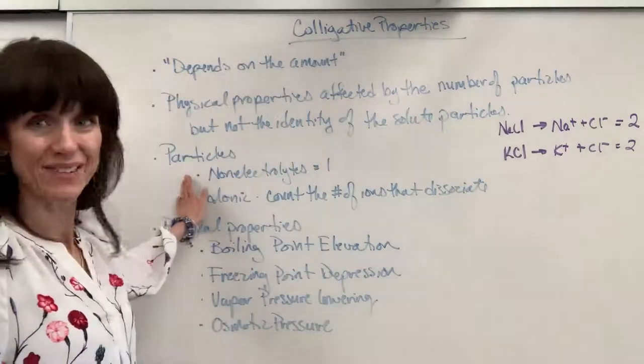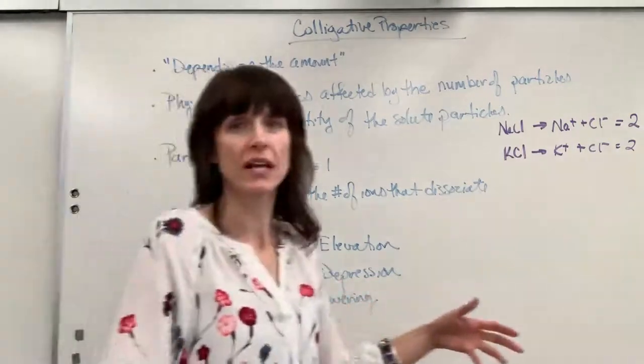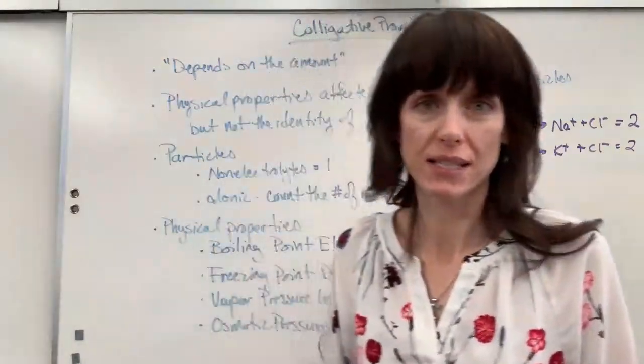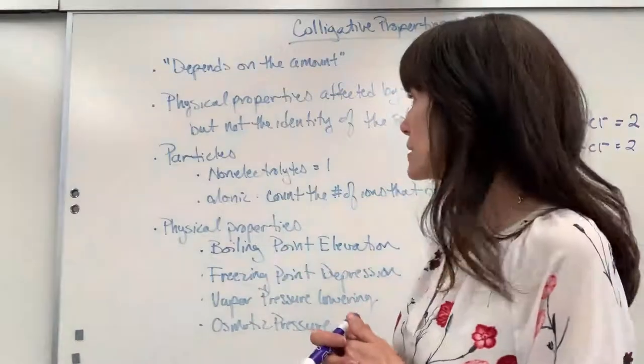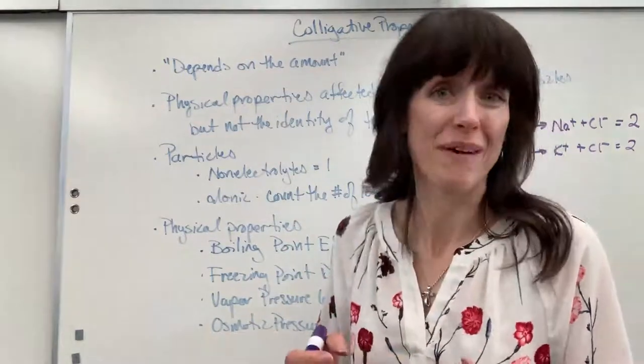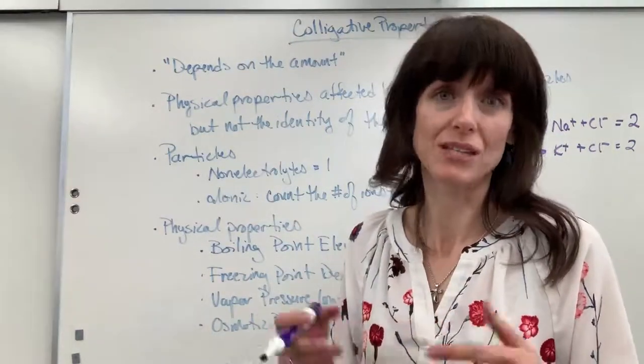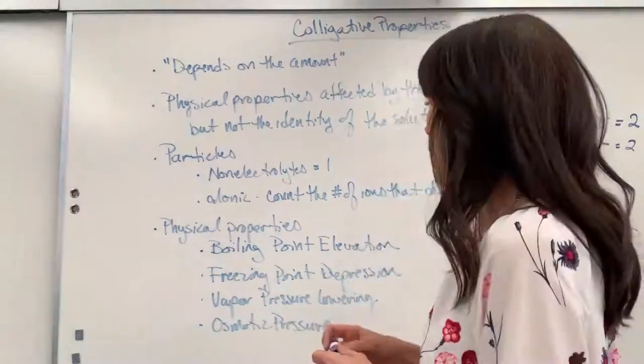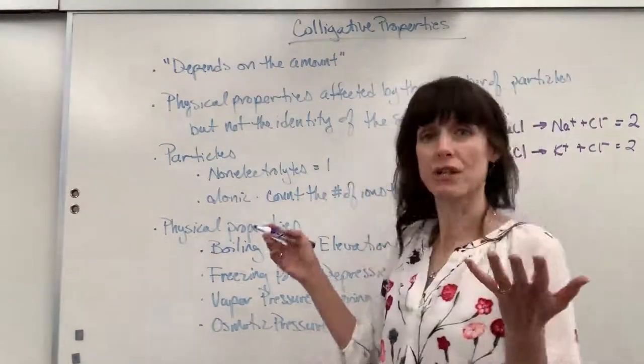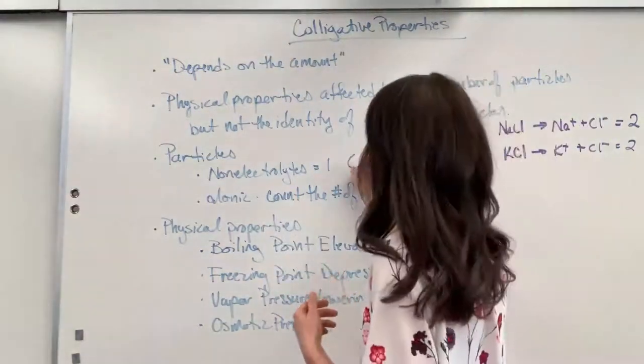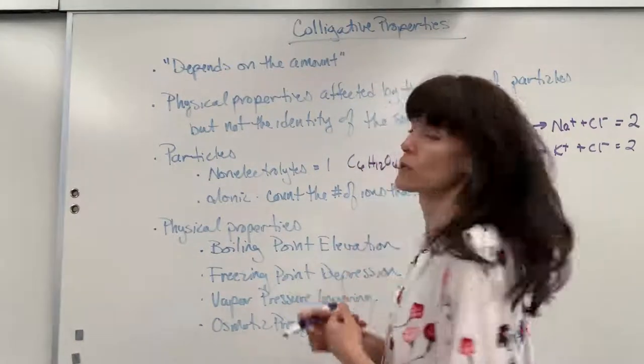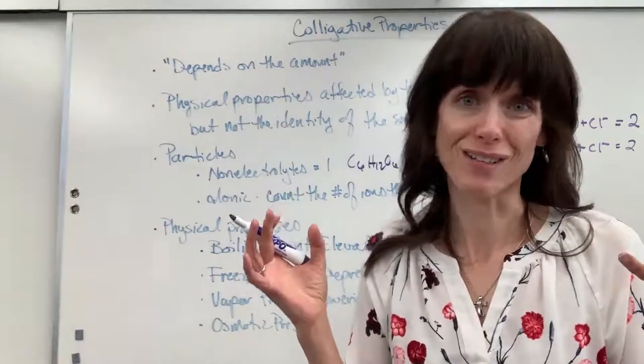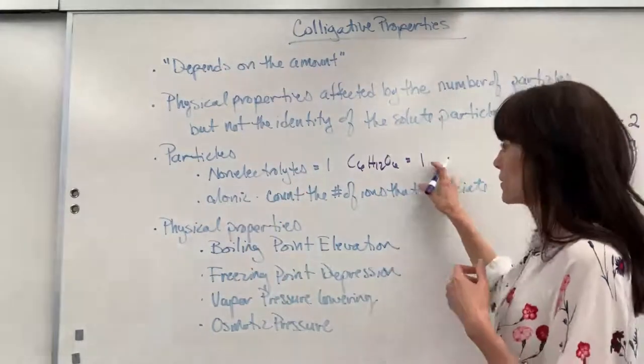Now, particles in counting these. Non-electrolytes, so anything that's not going to conduct electricity. And a good visual for this is going to be like covalent compounds that don't dissociate. They don't ionize in water. They would be considered one. So sugar, glucose, for example, if I had a C6H12O6, that would be considered one particle because it's not going to break into carbon and hydrogen and oxygen. So that's one particle. It will stay together.